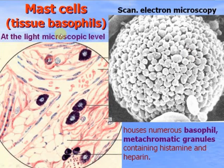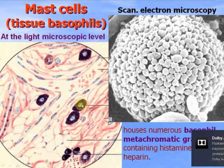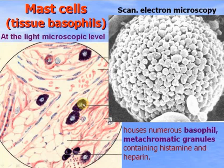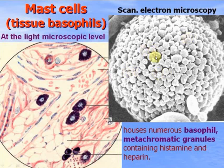Mast cells, called tissue basophils, contain a lot of large basophilic metachromatic granules containing histamine and heparin — similar to blood basophil leukocyte granulocytes. These granules are visible quite well under scanning electron microscopy.